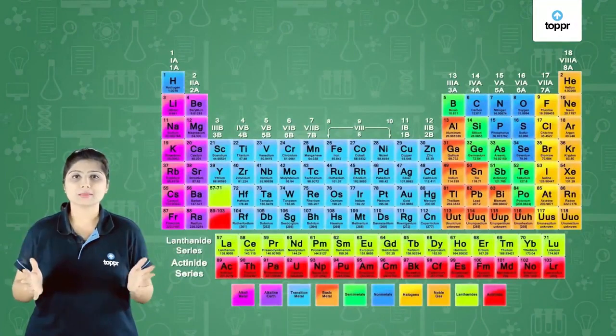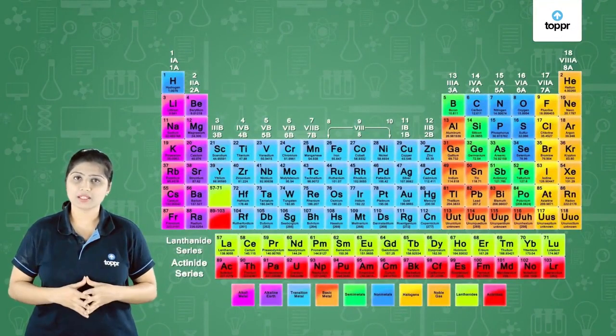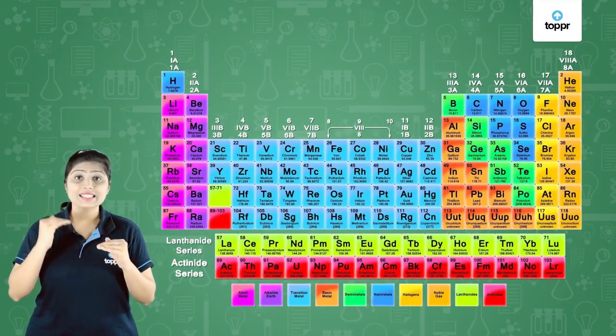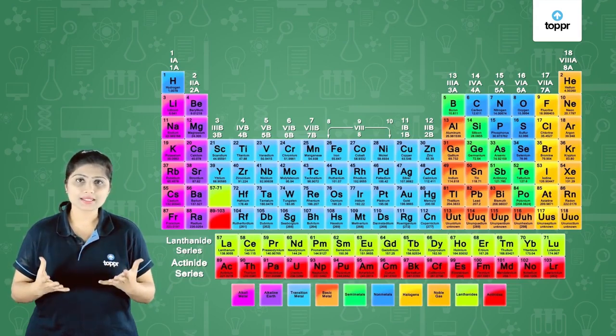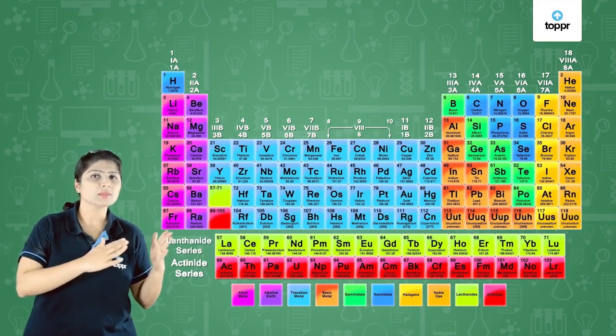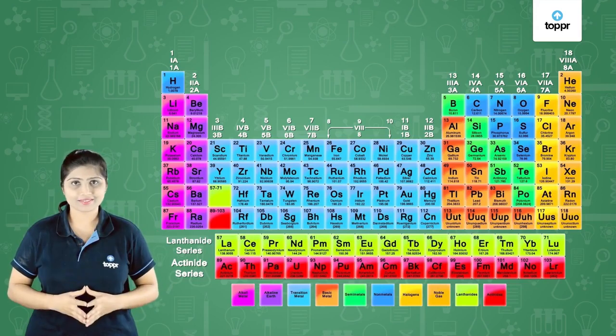Modern periodic table, the long form of periodic table. It has seven rows which are called periods and 18 columns which are called groups.